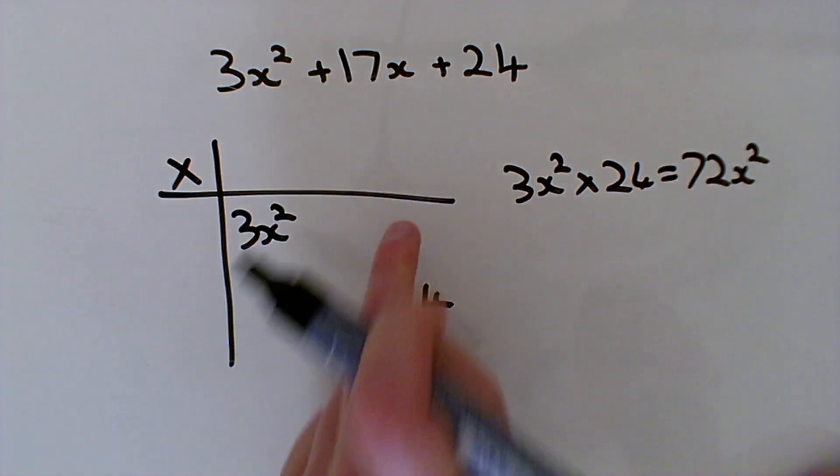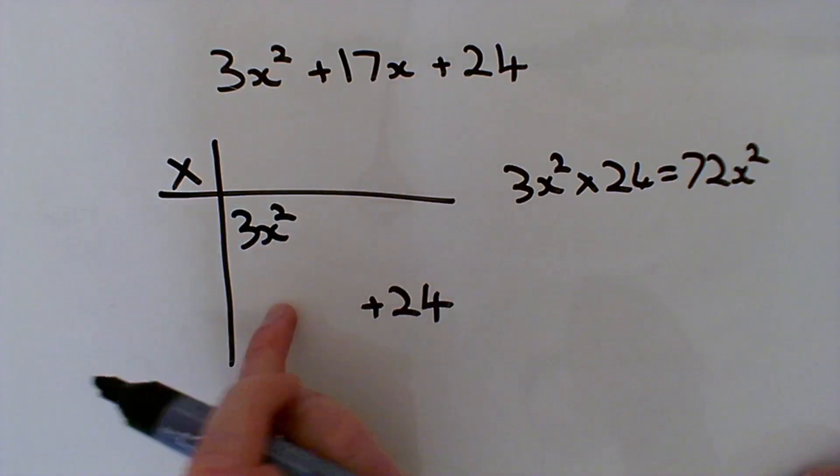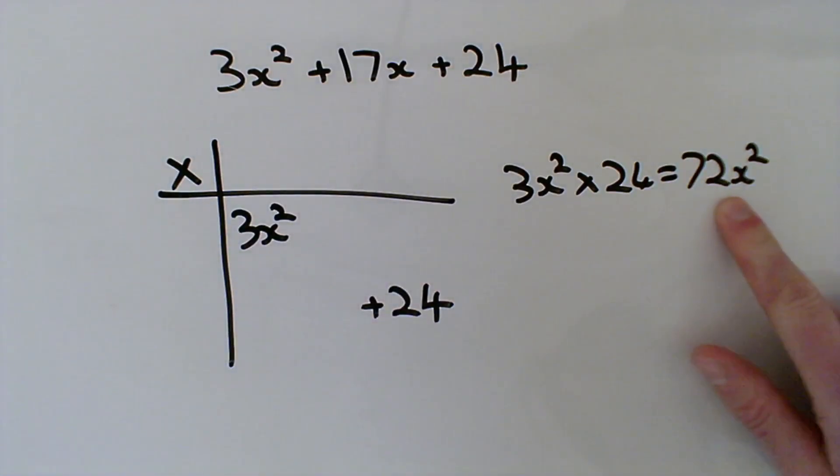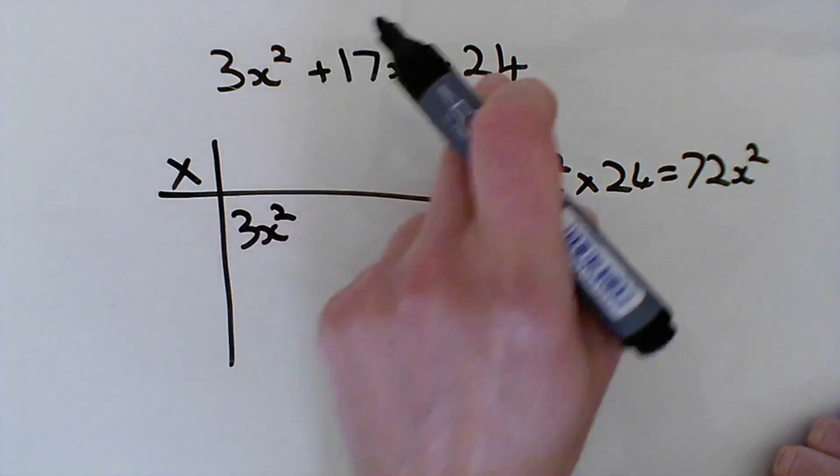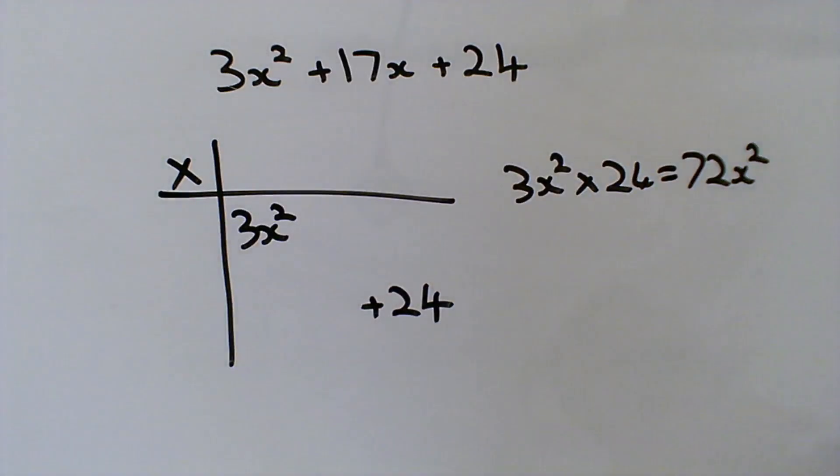And I know that these two terms here also have to give the same product of 72x squared, which is why you might be thinking why you do 3 times 24 when you're doing the split the first term method.